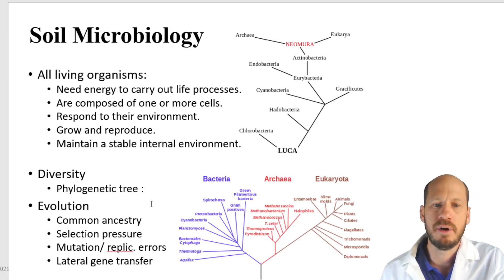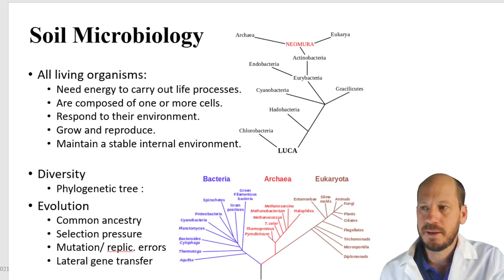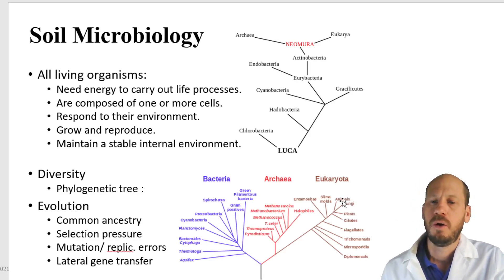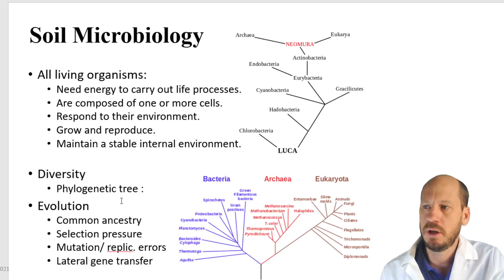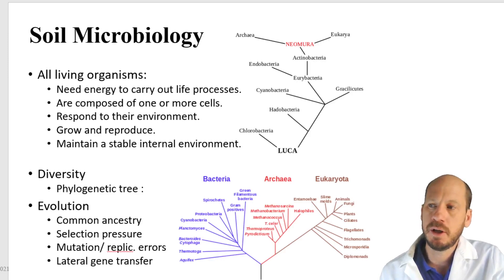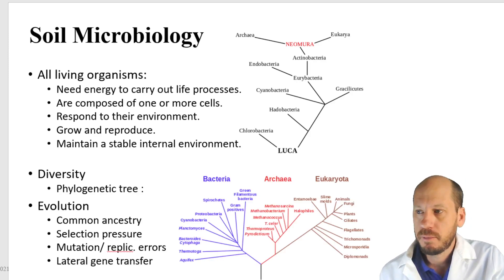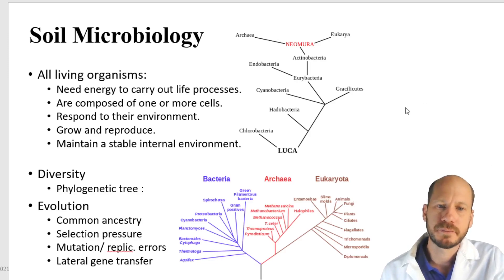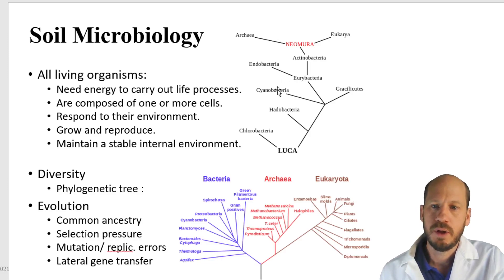How do we express all the diversity of these living organisms in the soil or in any environment? We use phylogenetic trees, like the very broad phylogenetic trees you see here on the right. These are built by the comparison of the sequences of genetic material of these organisms. The more similar they are to each other, the closer they will be on these trees. If they are very different, they will be placed further apart.